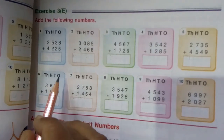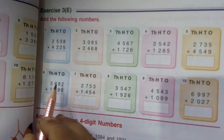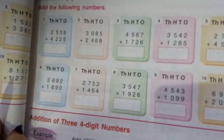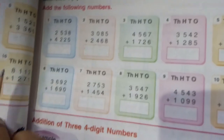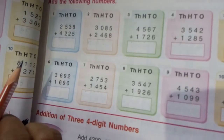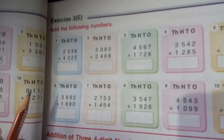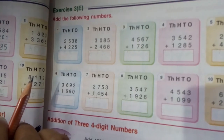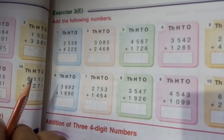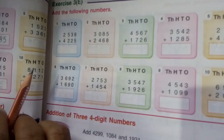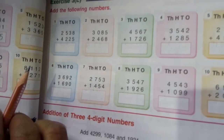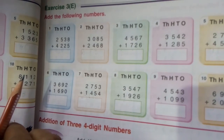Good morning children, today we will start exercise 3E, page number 49. In this exercise, we have to add a 4-digit number with a 4-digit number and there will be a carrying over.